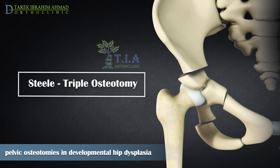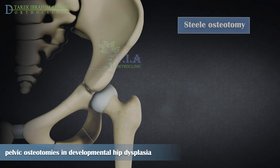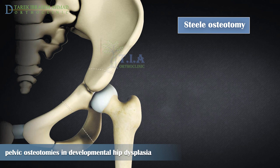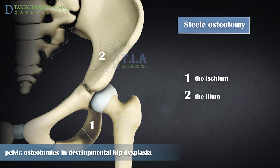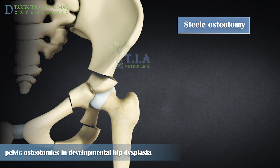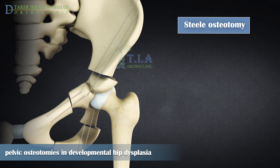Triple osteotomy (Steel): the primary indications are in older children and adolescents with open triradiate cartilage, because their symphysis pubis does not rotate well. Three separate osteotomies are performed on the lower ischium, the ilium above the acetabulum, and the superior pubic ramus; the acetabulum is then reoriented by rotating the created fragment. It is an unstable osteotomy requiring rigid fixation and immobilization. The drawback is that it violates the posterior column, creating pelvic discontinuity, pelvic asymmetry, and affects the birth canal, negating the possibility of normal vaginal delivery.